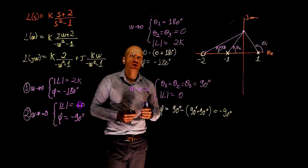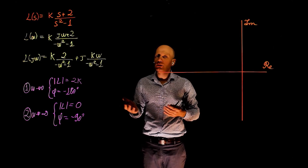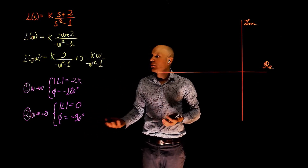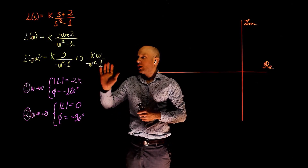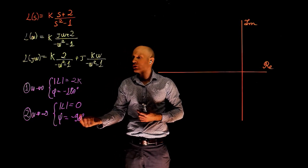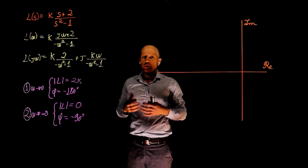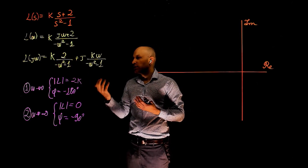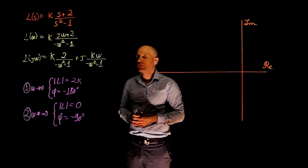Now we can draw the Nyquist plot. One step we didn't consider yet is the imaginary and real axis crossings. To find the real axis crossing, we set the imaginary part to zero. The only values of ω that make the imaginary part zero are ω=0 and ω→∞, which were already calculated. To find the imaginary axis crossing, we set the real part to zero — this only happens when ω→∞. So there is no additional information from this analysis, but it is a step you should always take.